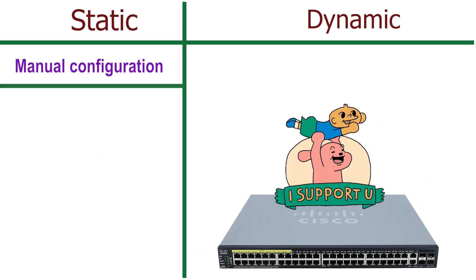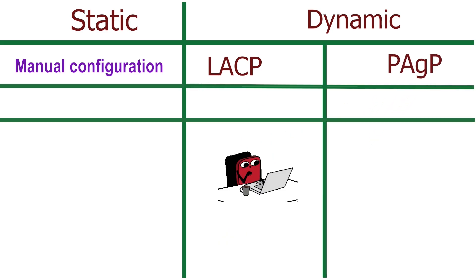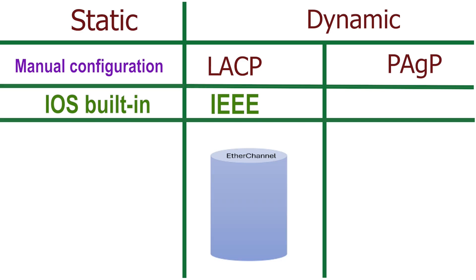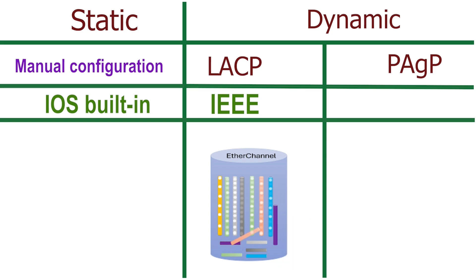Cisco switches support two EtherChannel protocols: LACP and PAGP. IEEE developed LACP as an open standard protocol — it works with all vendors' switches. It can combine up to 16 links; however, it uses only 8 of them at a given time, keeping the remaining in waiting. If any active link fails, it adds a waiting link to the pool.